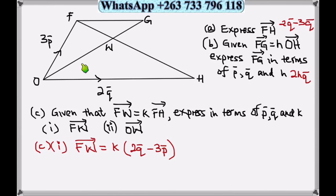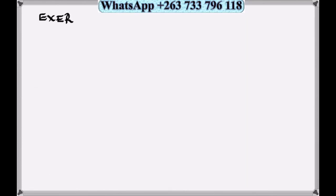Then on part 2, OW. To go on OW, we start from O to F, we are given 3p. Then FW, we have found FW, so we add since we are going the same direction with the vector. So let's add: 3 vector p plus k times 2q minus 3p. We can leave it like this, or we can expand and group like terms. These are how we express vectors with constants.